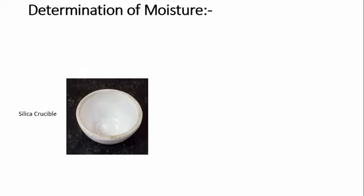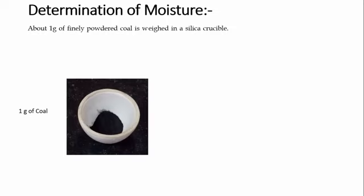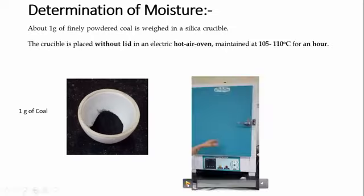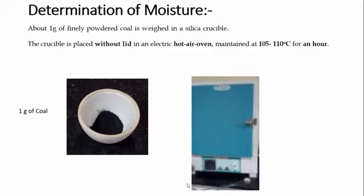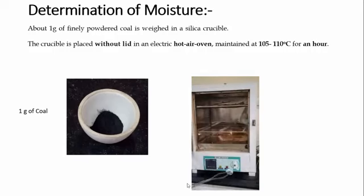Let us study the first content, that is determination of moisture. For the moisture content, we use a silica crucible. We use silica crucible because the melting point of silica is around 2000 degrees Celsius or more than that, so it is stable for the temperature at which we are going to carry out the analysis. About 1 gram of powdered coal is weighed into the silica crucible, then it is placed without a lid in an electric hot air oven maintained at 110 degrees Celsius for 1 hour.